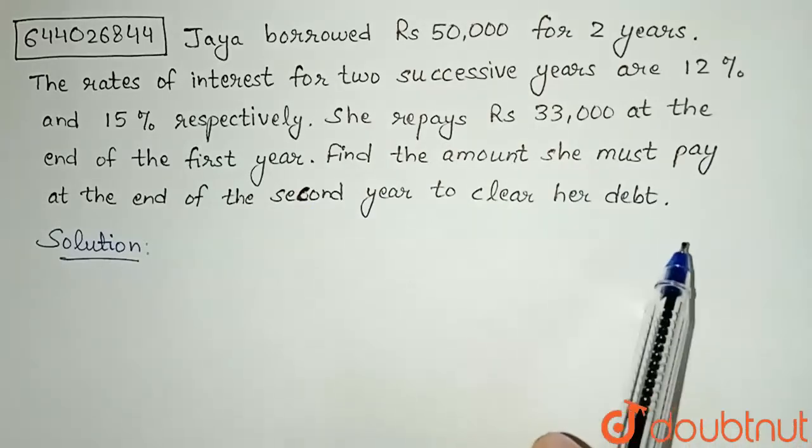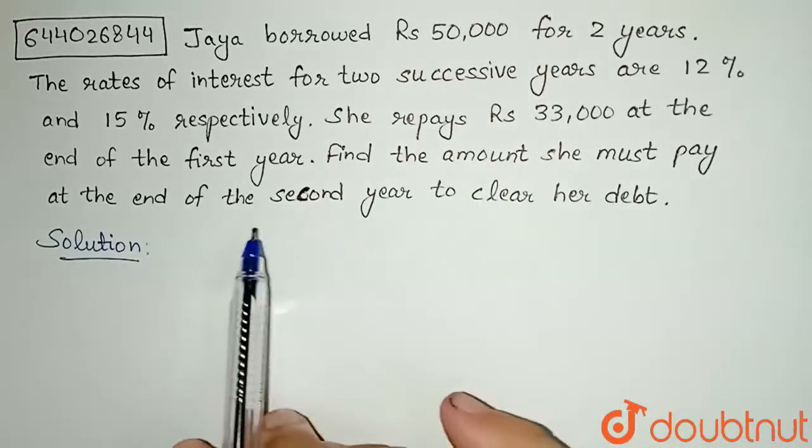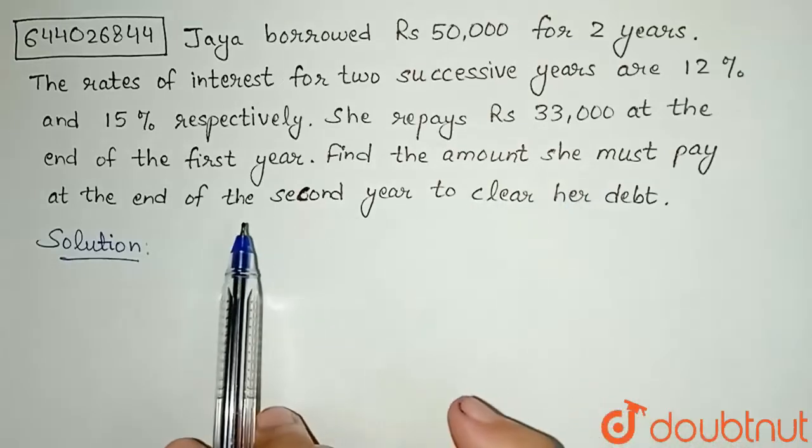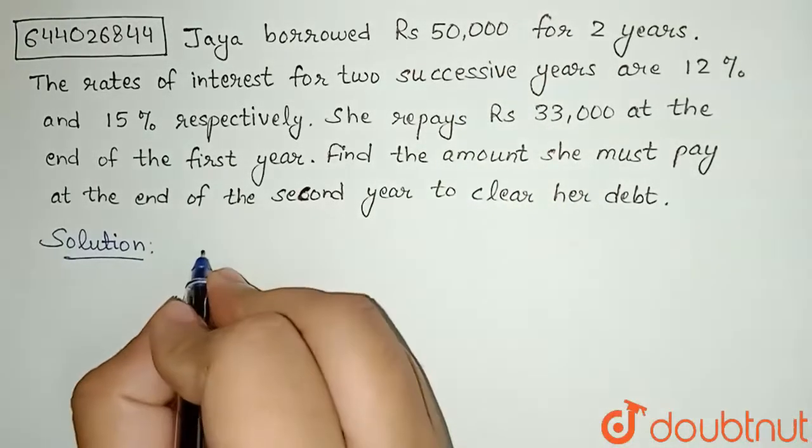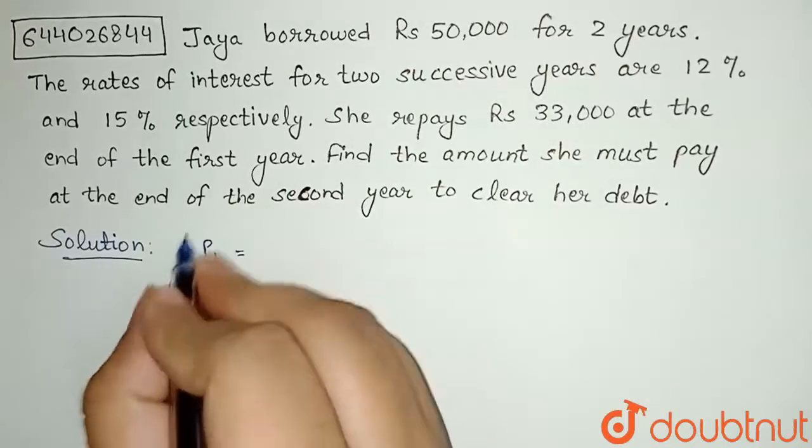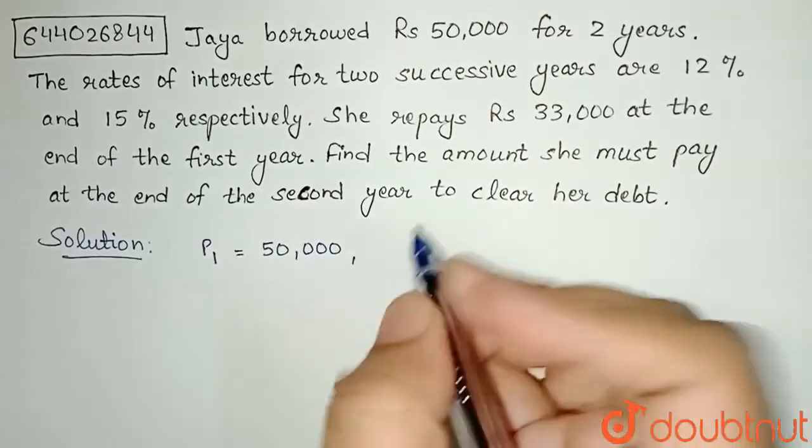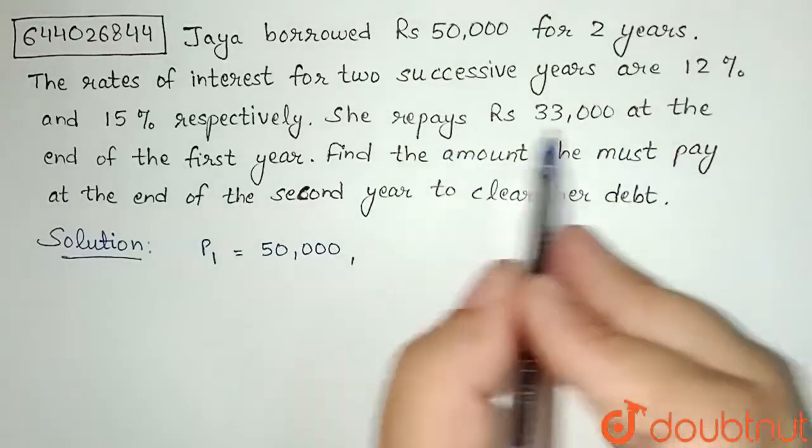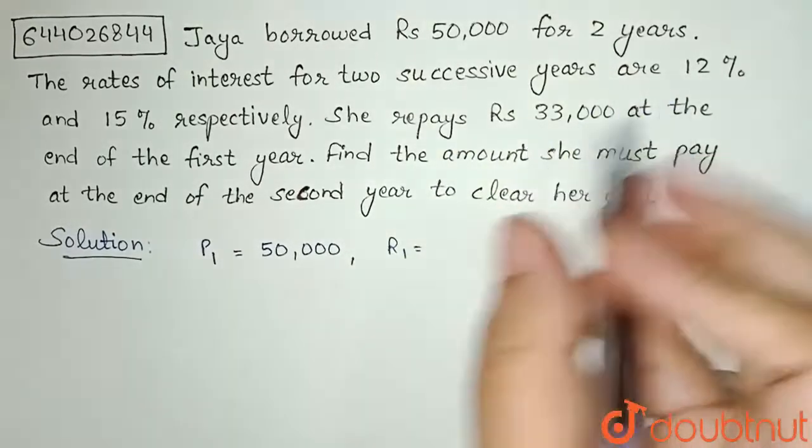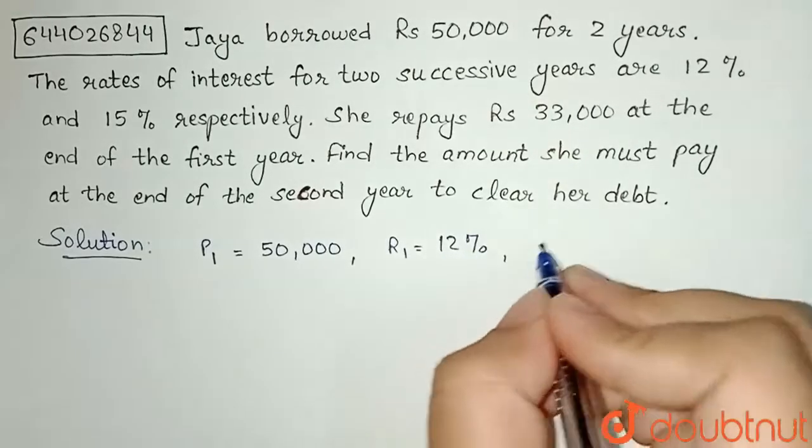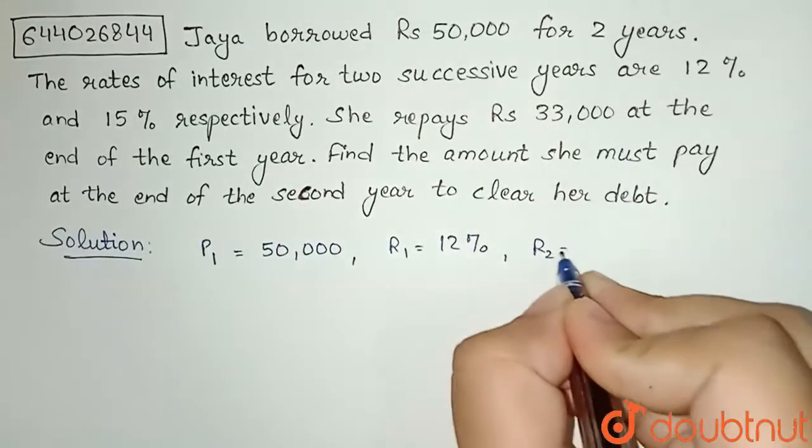So in this question, we need to find the amount to be paid after the second year. She has borrowed Rs 50,000, so P1 (principal amount) = 50,000. We are given that the rate of interest for the first year is 12%, so R1 = 12%, and R2 = 15%.